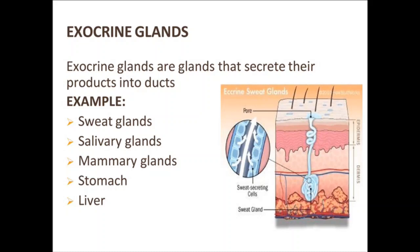In the previous chapter, we studied about the integumentary system. This is the diagram of our skin in which we can see the epidermis and dermis. In the dermal part of the skin, there is a sweat gland. The sweat gland is an exocrine gland. Its duct comes out through the skin and the pore opens to the surface — this is why it is called an exocrine gland.